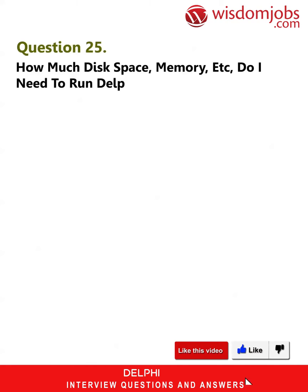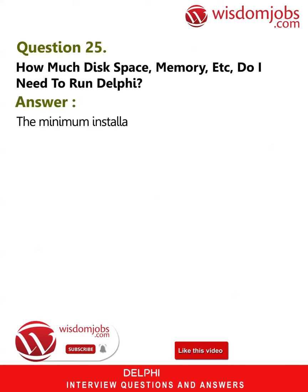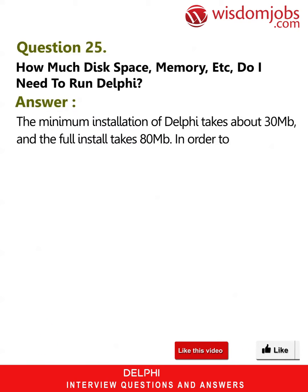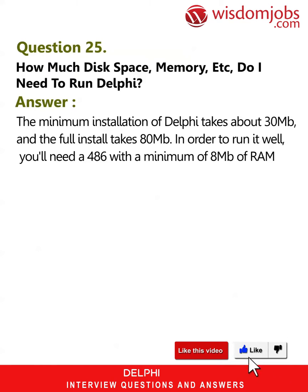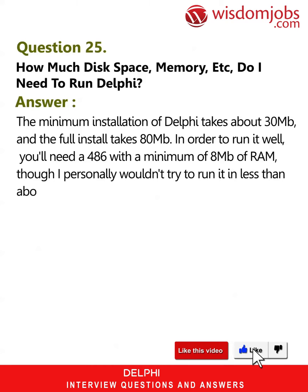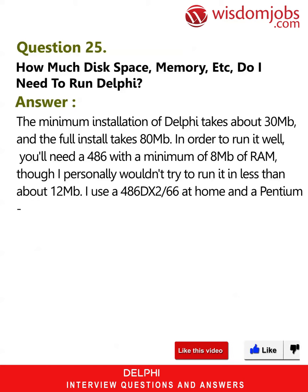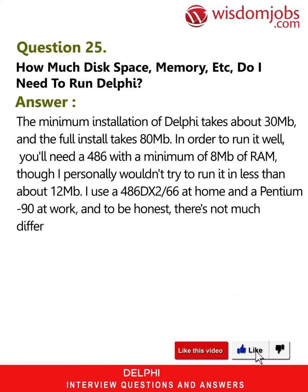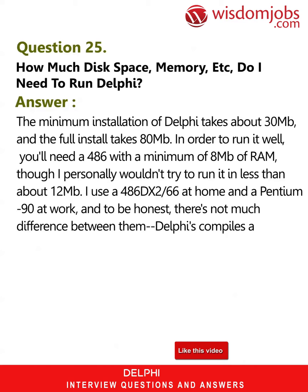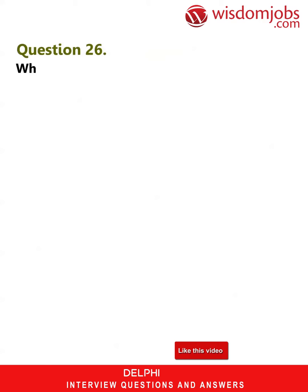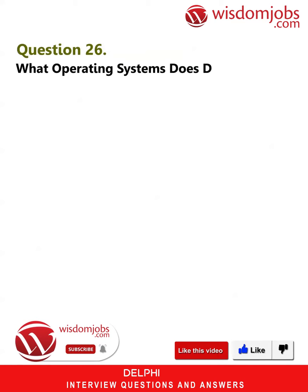Question 25: How much disk space and memory do I need to run Delphi? Answer: The minimum installation takes about 30 MB and the full install takes 80 MB. To run it well you'll need a 486 with a minimum of 8 MB of RAM, though I personally wouldn't try to run it in less than about 12 MB. I use a 486 DX2/66 at home and a Pentium 90 at work, and honestly there's not much difference — Delphi's compiles are so fast that the CPU is really not a bottleneck.